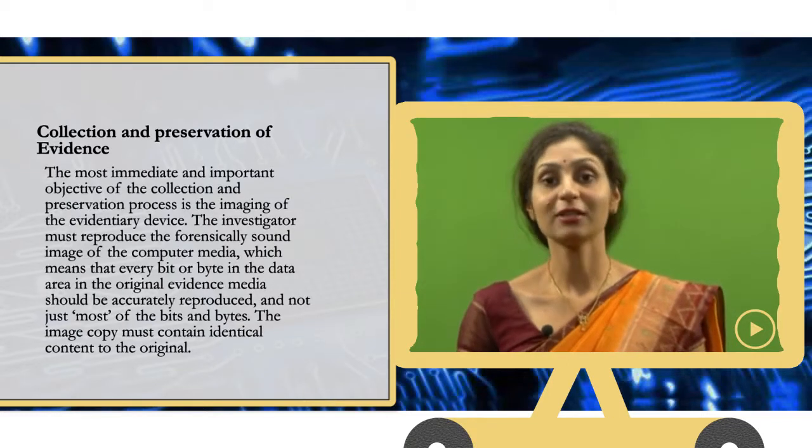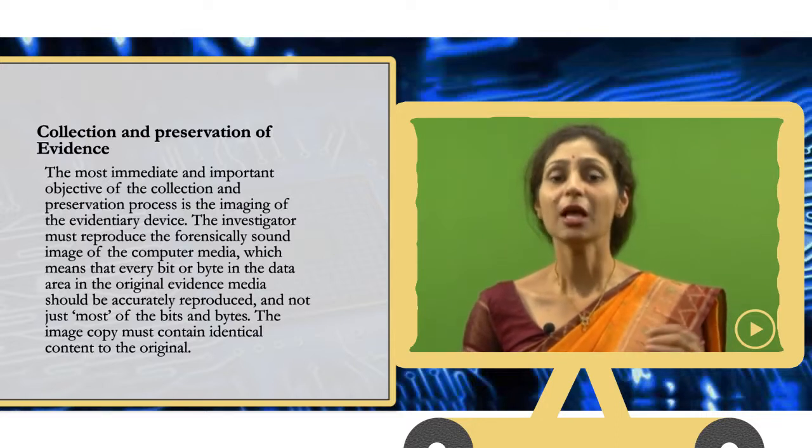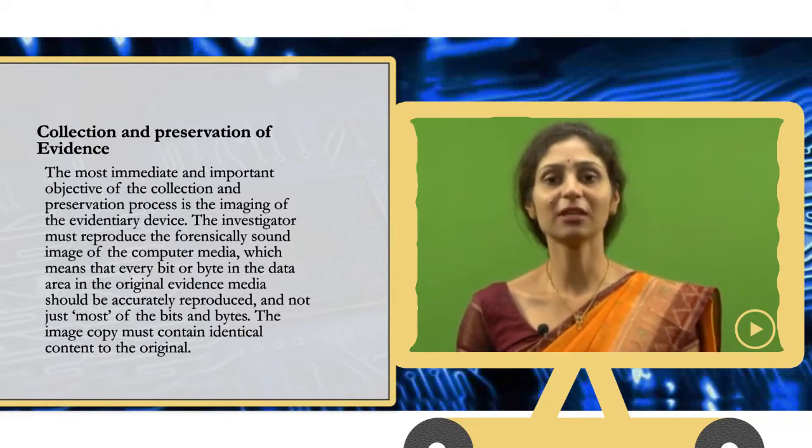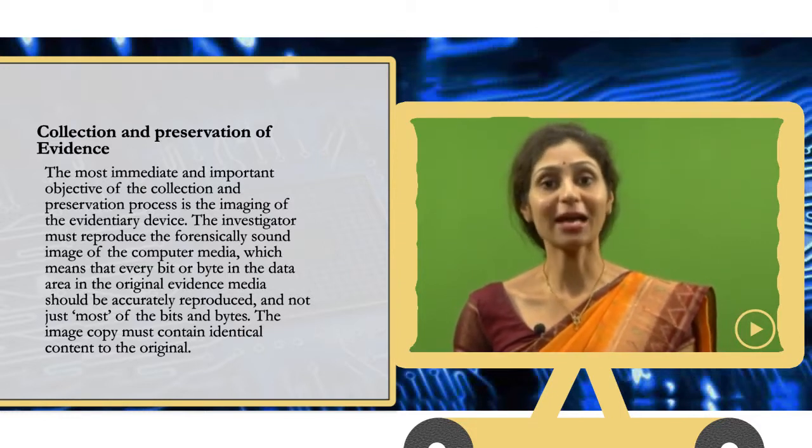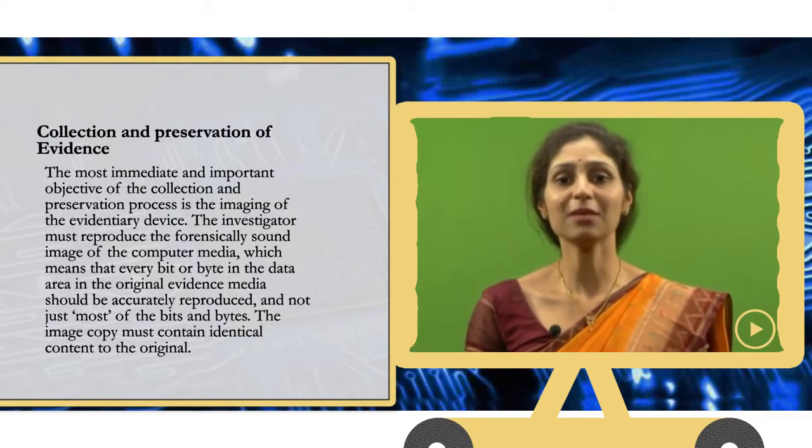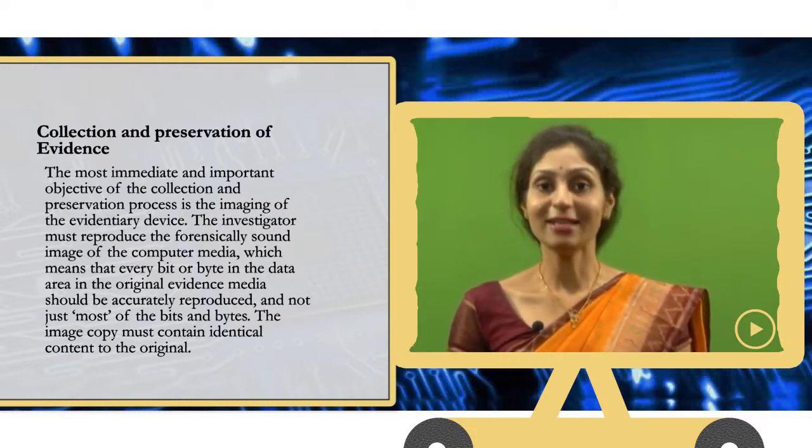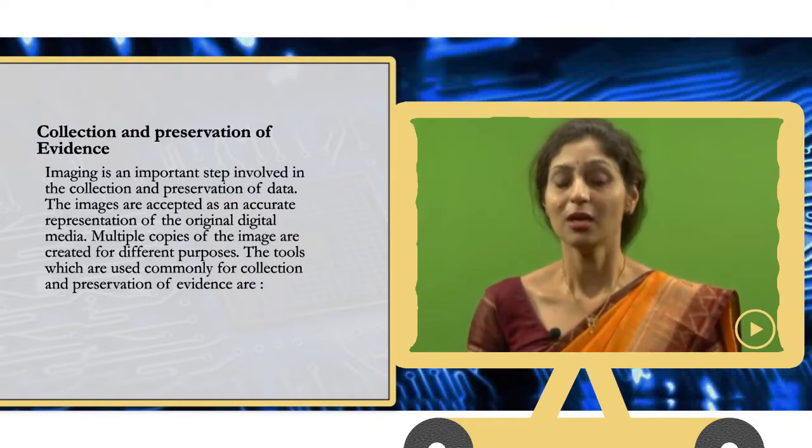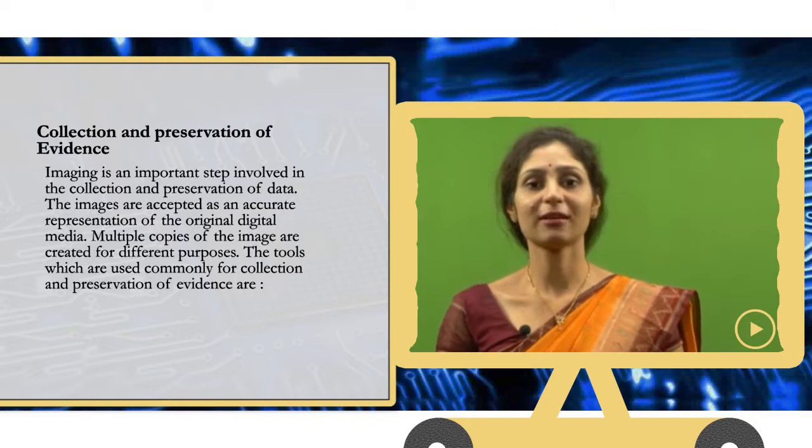The most immediate and important objective of the collection and preservation process is the imaging of the evidentiary evidence to take out multiple images, to take out multiple copies of the evidentiary device. The investigator must reproduce the forensically sound image of the computer media, which means that every bit or byte in the data area in the original evidence media should be accurately reproduced. Every bit or byte should be accurately reproduced, not just most of the bits and bytes, but every bit or byte, so as to make sure that it is accurate and authentic. The image copy must contain identical content to the original. So, imaging is a very important step involved in the collection and preservation of data.